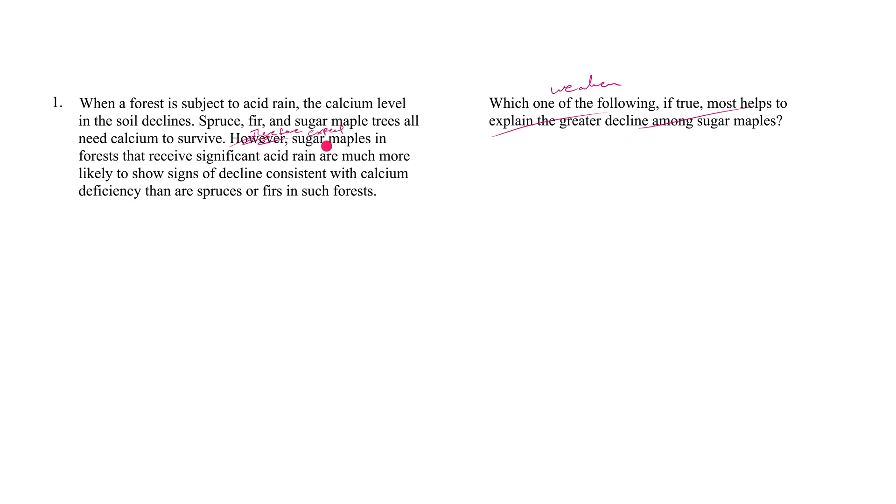...therefore, one would expect that—and you have to negate this—one would expect that sugar maples in forests that receive significant acid rain are not much more likely to show signs of decline consistent with calcium deficiency than are spruces or firs in such forests. It's such a wordy way of saying it.